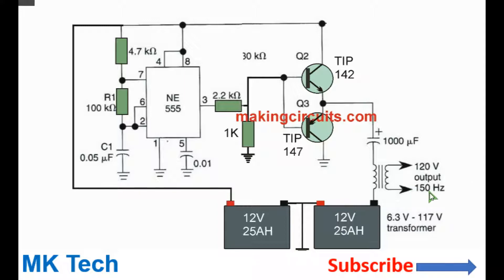The output frequency can be controlled by adjusting the values of either of these three components, but the one which you can easily vary is C1.